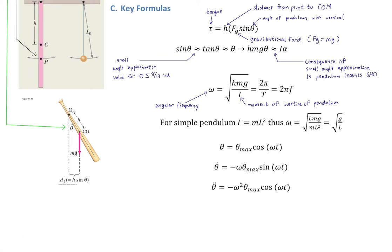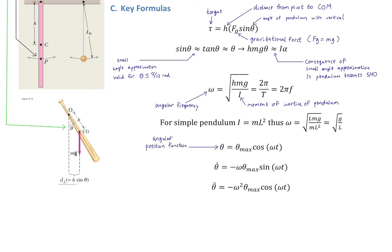We can write position, velocity, and acceleration functions using the same rules and phase angle shifts as for the spring. The position function starts with cosine, the amplitude is now an angular amplitude θ_max in radians, and the displacement is angular displacement measured in radians. The angular frequency ω is either √(hmg/I) for a physical pendulum or √(g/L) for a simple pendulum.